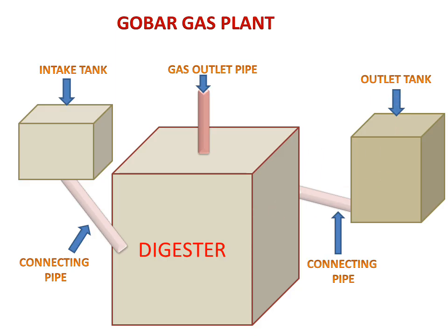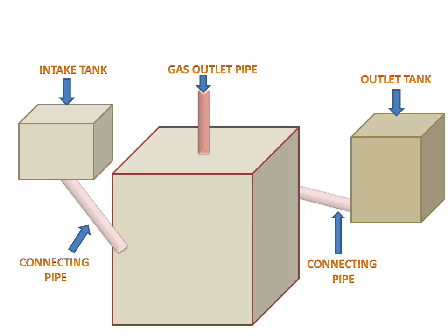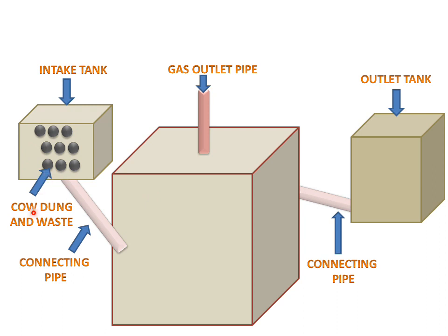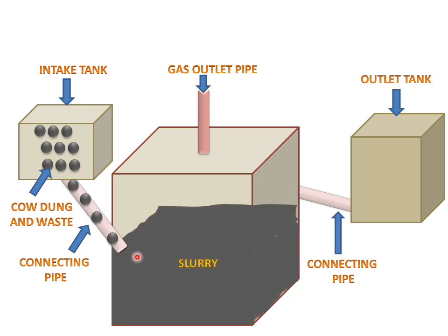Now we will see the animation of the gobar gas plant working. Firstly we will have cow dung and waste. From the intake tank we will supply this cow dung and waste. These are the particles of the cow dung and waste.